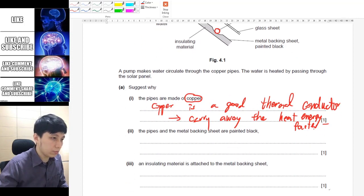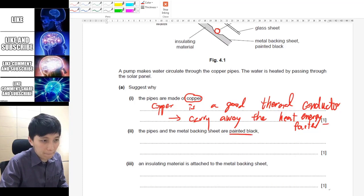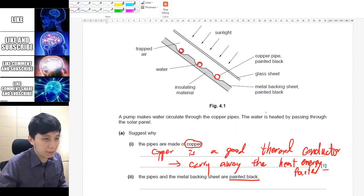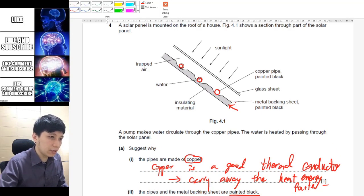Number two, saying that the metal backing sheets are painted black. So referring to this, obviously you can see that this is a house and sunlight going in, and that means at this region, this is indoor, where people are living inside.